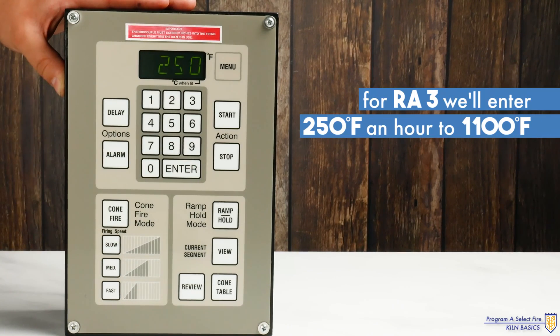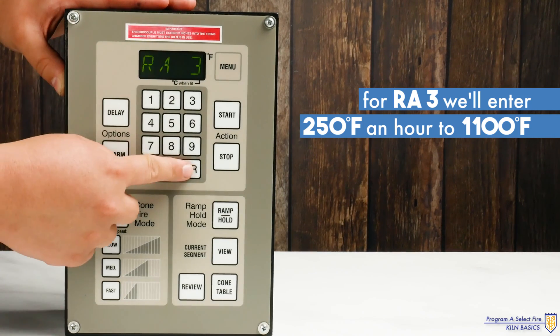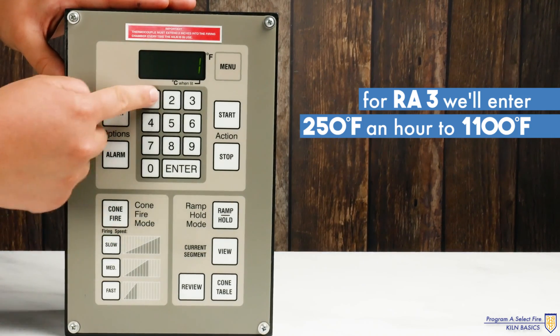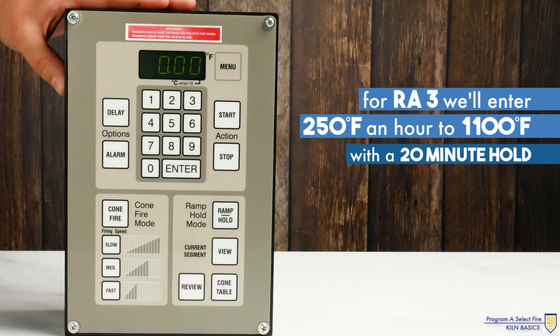For ramp 3 reading RA3 we'll enter 250 degrees Fahrenheit an hour to 1100 degrees Fahrenheit with a 20 minute hold.